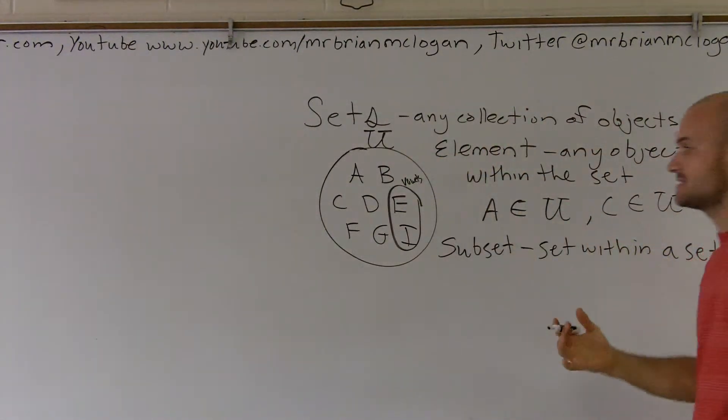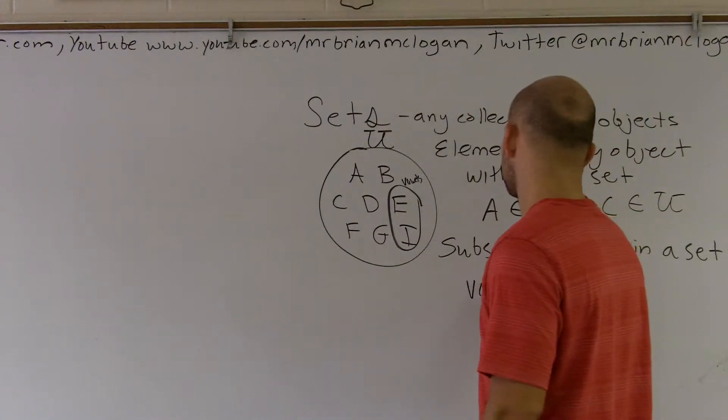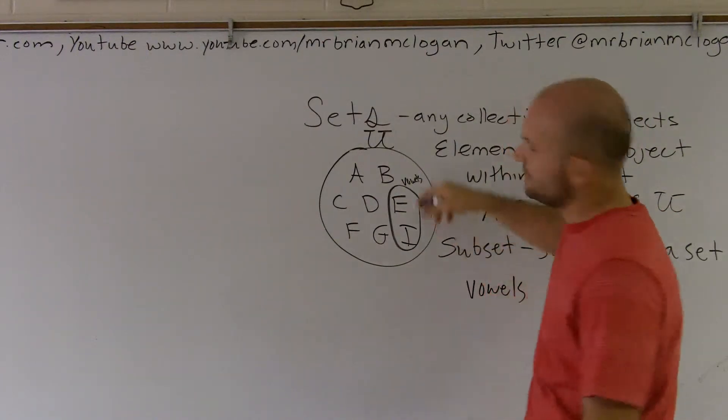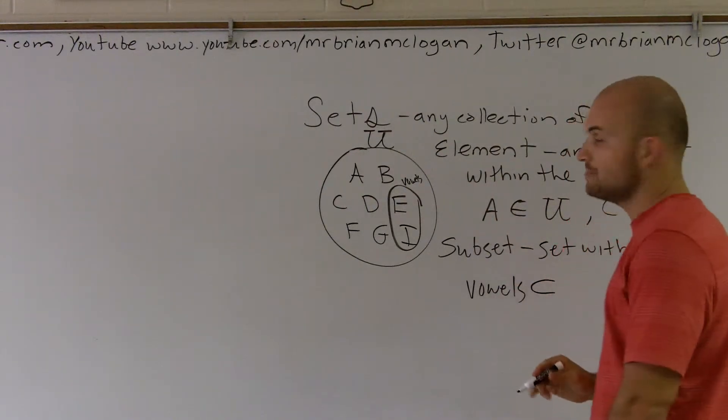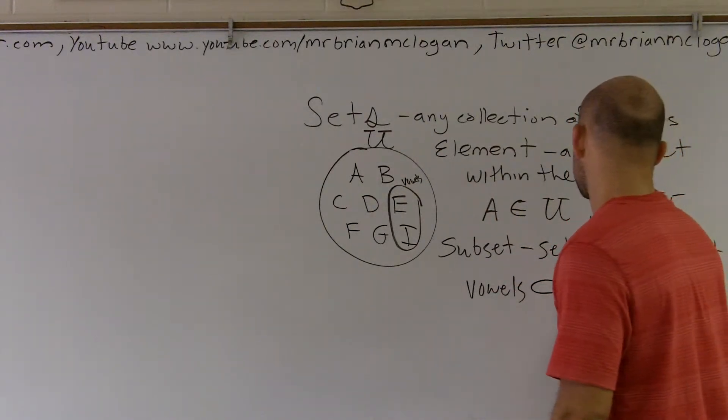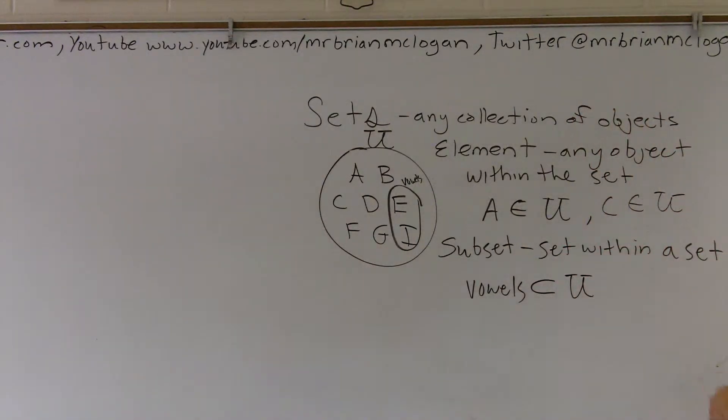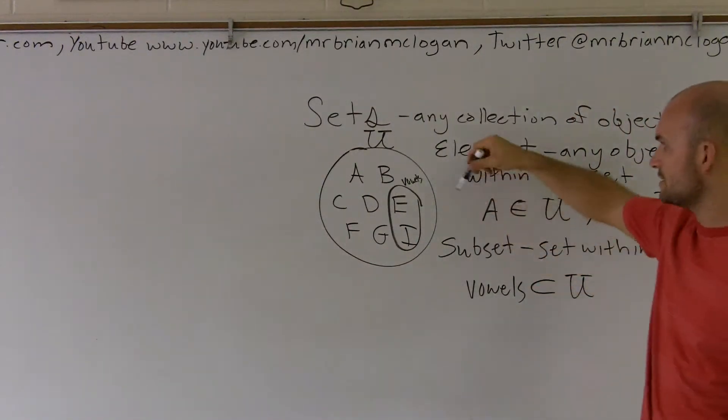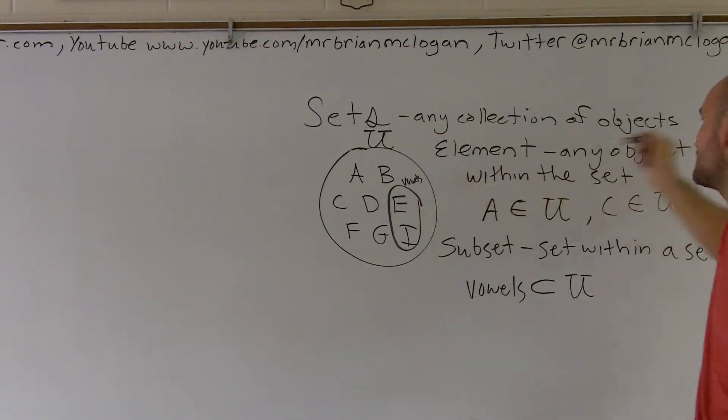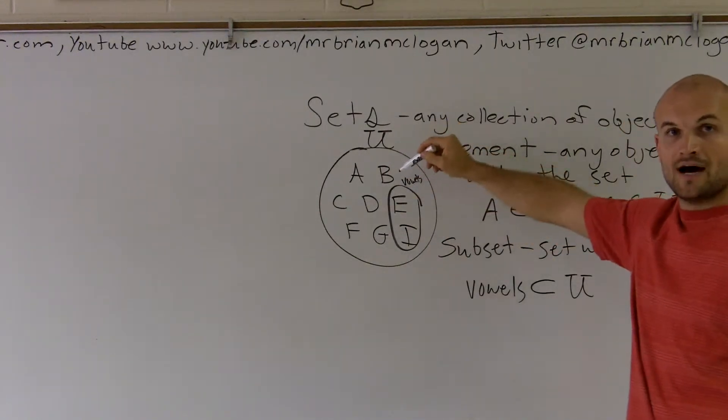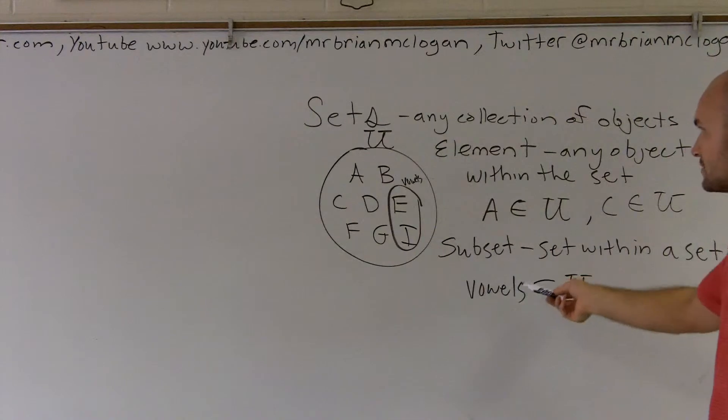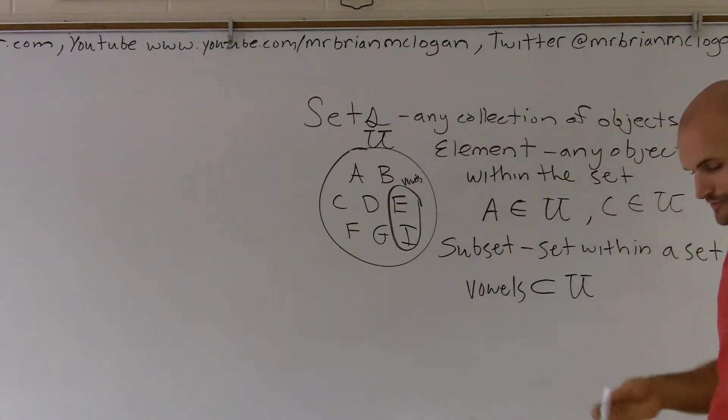So, when to say that something's a subset, you could say vowels, which in this example is E and I. Vowels is a subset of U. You could also say E is also an element of U. I is also an element of U. And since they are a set, they subset together as they're the only vowels in here, we could say that the vowels subset is now a subset, the vowels is a subset of your universal set.